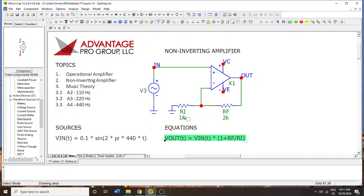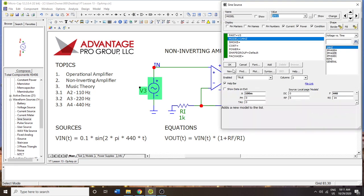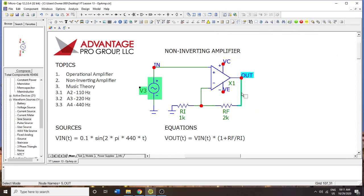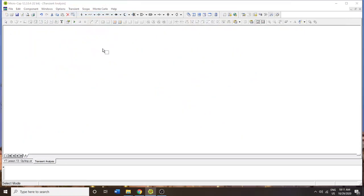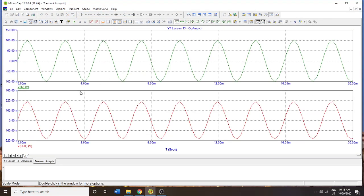We can expect that 2 divided by 1 is 2, and then plus 1 is 3. So the output is supposed to be three times as large as the input. Since this was 100 millivolts, we can expect this to be 300 millivolts. The frequency content is retained, so it's still at 440 hertz.